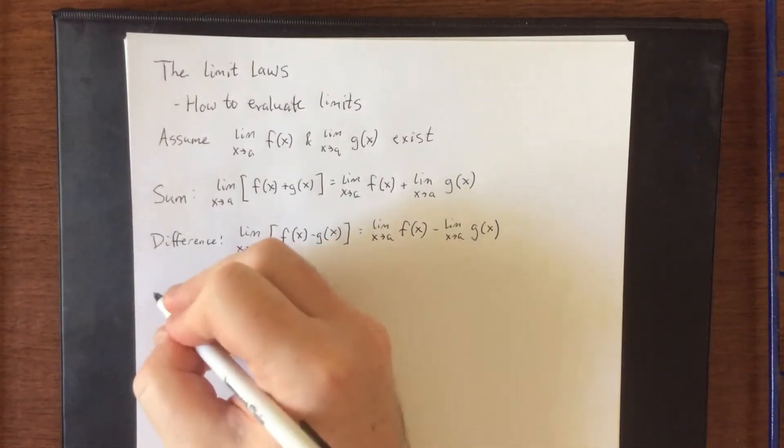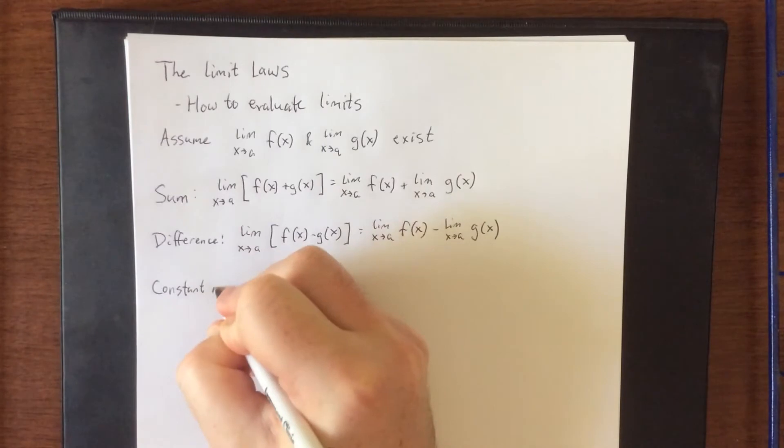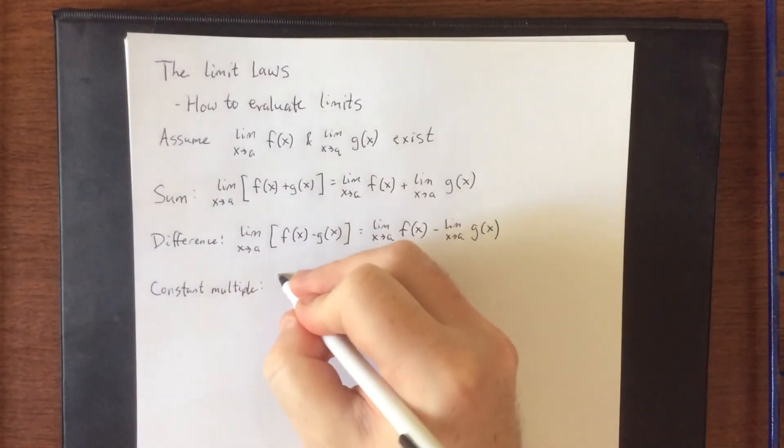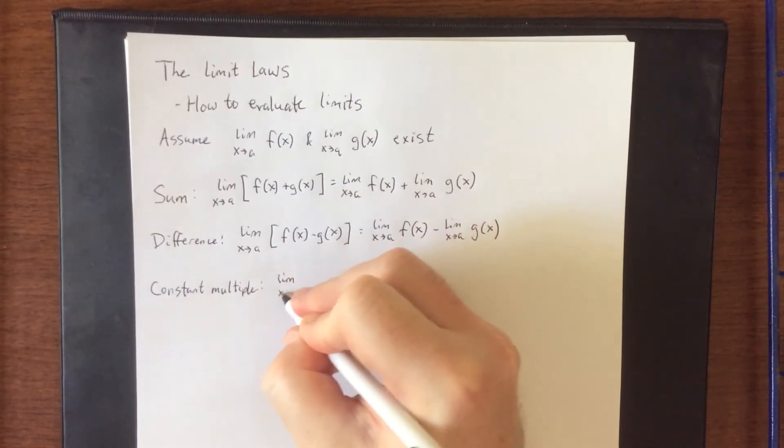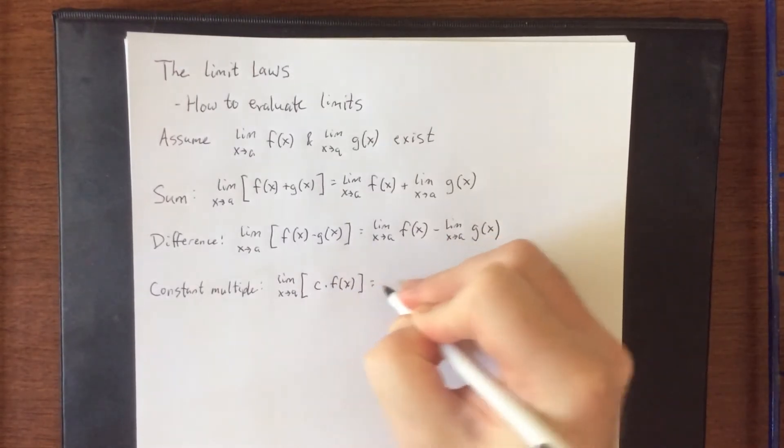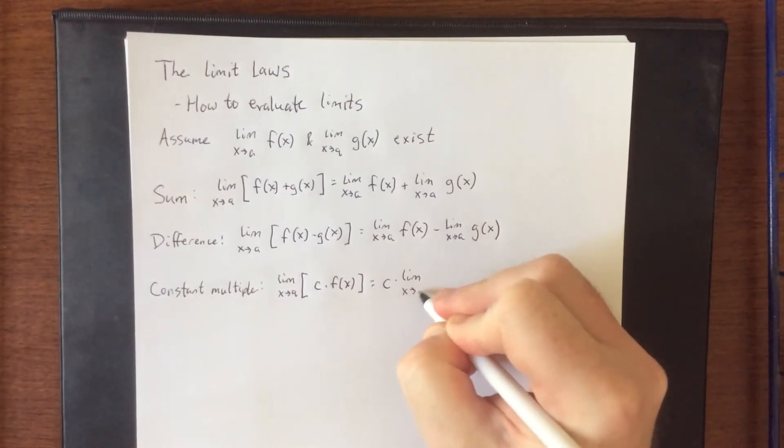There's also the constant multiple law. The constant multiple law says if you're taking the limit of a constant times some function, then you can take the constant and move it outside of the limit, keeping it as a coefficient.